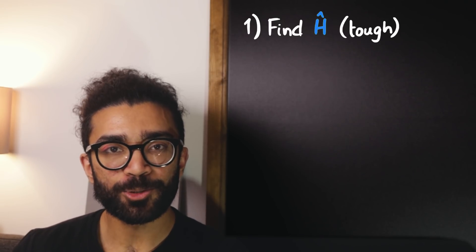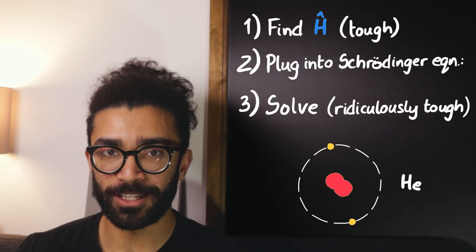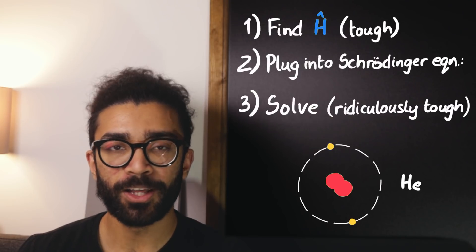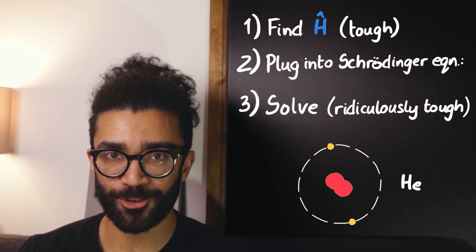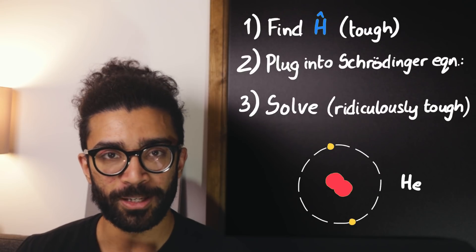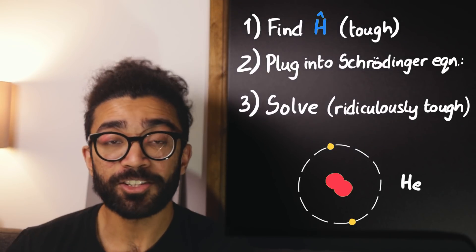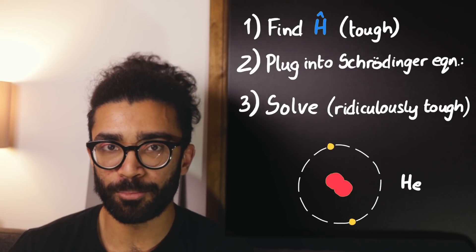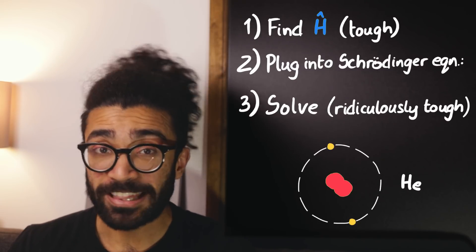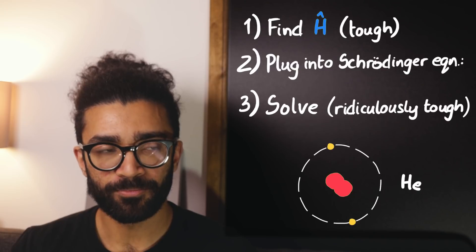And when we try and do a similar sort of thing for the next atom up in the periodic table, which is helium, let's say two protons, two electrons, things only get worse from here, mathematically speaking. And this is just for a helium atom. Forget lithium, beryllium, boron, and so on and so forth. Don't even think about anything like uranium.